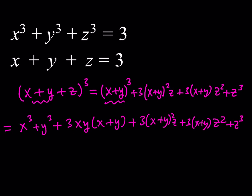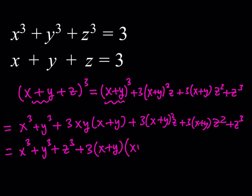So we now have x³ plus y³ plus z³. The remaining three terms all have a common factor of 3(x + y). Factoring that out, we get 3(x + y) times the quantity xy plus z(x + y) plus z². That's our expression.